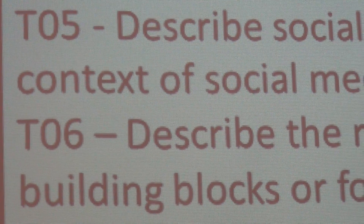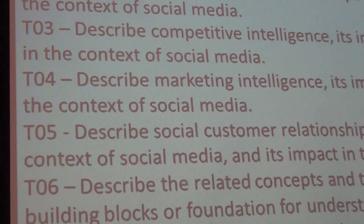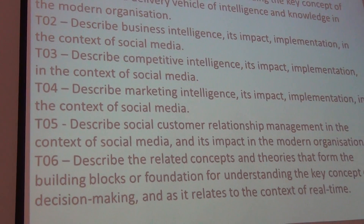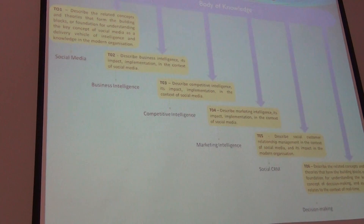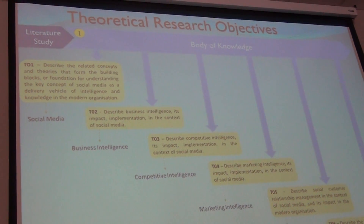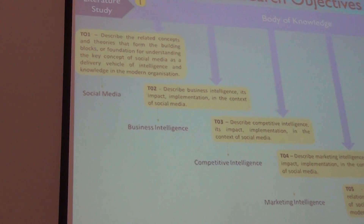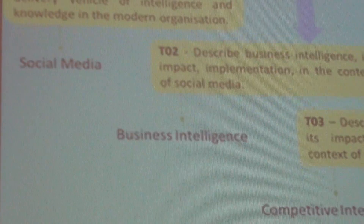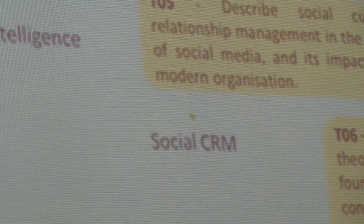But where would he look for the work that is already there? You look in the theory, and we write down the theoretical objectives — which would be what is in the theory about this. So he's going to describe related concepts and theories. These are the theoretical research objectives, and these become the headings of the literature study. He's going to look at social media, business intelligence, competitive intelligence, marketing intelligence, and social decision-making. Now he's structured, and he gets them by knowing what he wants to deal with in terms of the empirical objectives.